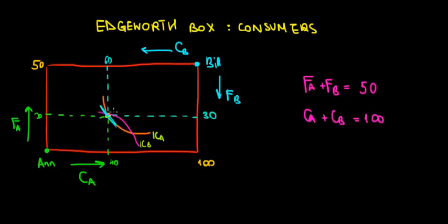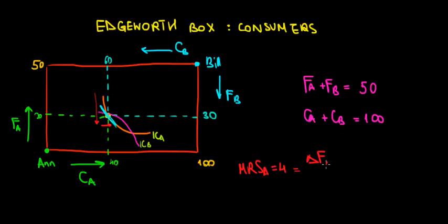Let's give an example: the MRS of N at that point is equal to 4. That means N is giving up some food for one more unit of clothing. So the change in food for N over the change in clothing for N equals 4.